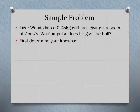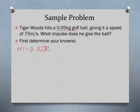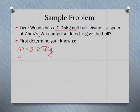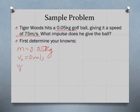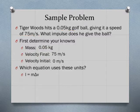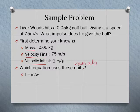Our first sample problem: Tiger Woods hits a 0.05-kilogram golf ball giving it a speed of 75 meters per second. What impulse does he give the ball? First, write out the knowns: mass = 0.05 kg and there's a velocity of 75 m/s. Since we're dealing with impulse we need initial and final velocity. Think logically — the ball starts from rest, so initial velocity V0 = 0 m/s, and after being hit the final velocity VF = 75 m/s.